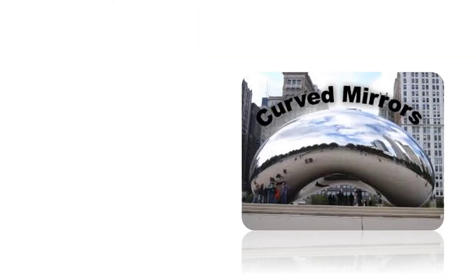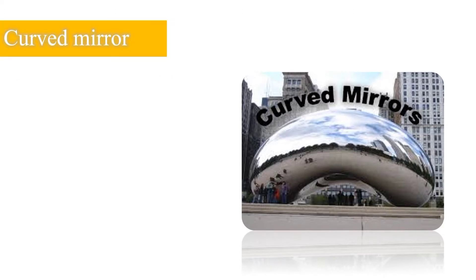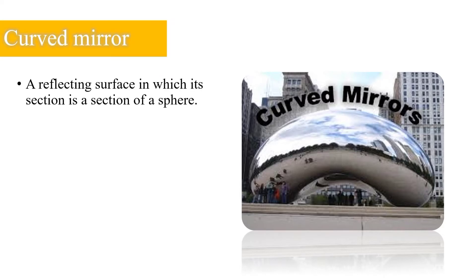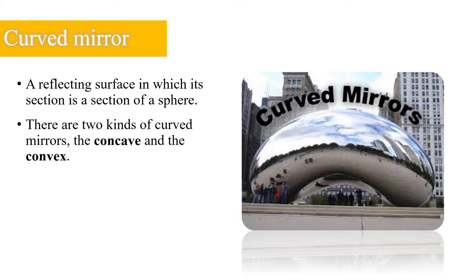Let us first define a curved mirror. A curved mirror is a reflecting surface whose section is a section of a sphere. There are two kinds of curved mirrors: the concave and the convex.